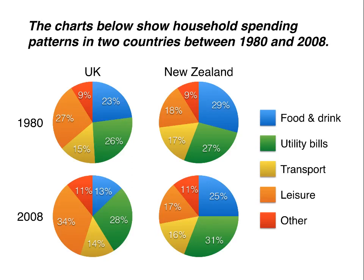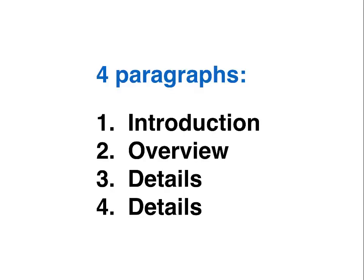We've got the two countries, UK and New Zealand, and on the left you can see 1980 and 2008. The spending is in five categories: food and drink, utility bills, transport, leisure, and other. Our job is to compare those pie charts — compare the percentages of spending in the two different countries and in both years. As usual, we're going to write a four-paragraph essay: introduction, overview, two paragraphs of details, and no conclusion. If you're not sure why there's no conclusion, please watch the introduction lesson for writing task one.